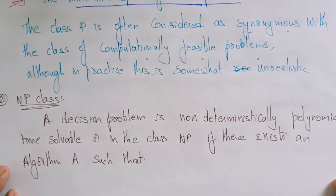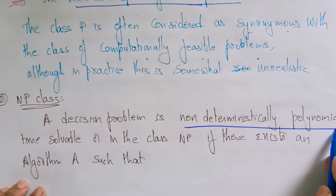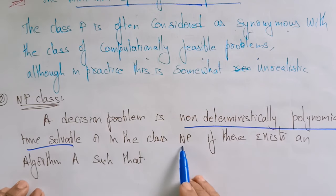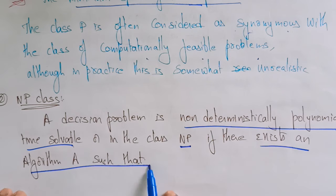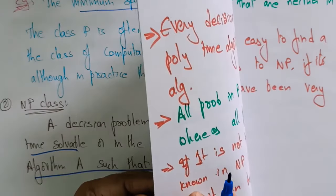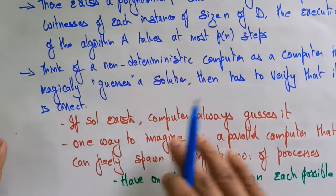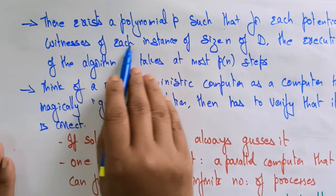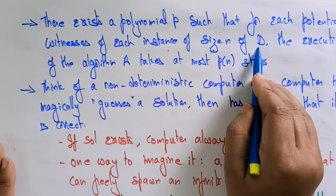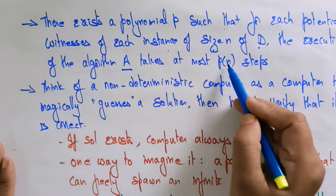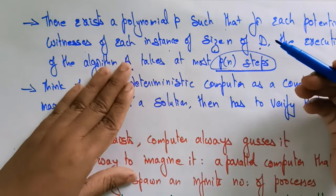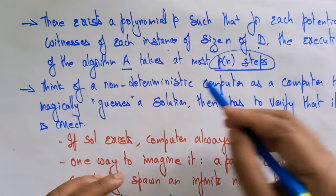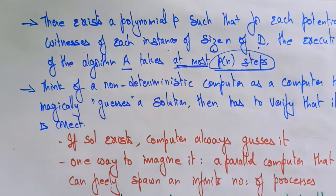Now coming to the NP class. What is this NP class? NP class is non-deterministic — a decision problem is non-deterministically polynomial time solvable, or in the class NP, if there exists an algorithm A such that there exists a polynomial P such that for each potential witness of each instance of size N of D, algorithm A takes at most P of N steps.